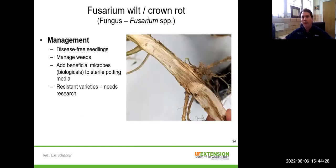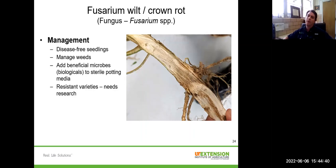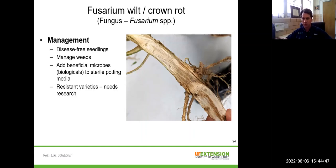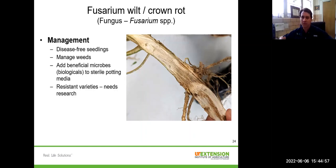Fusarium wilt or Fusarium crown rot is also a difficult disease to manage. There are a number of Fusarium species that can cause this. You'll see wilt similar to southern blight, but unlike southern blight you won't get sclerotia forming at the base of the plant. If you cut the stem lengthwise, you'll see brown discoloration in the stem tissue. We often manage Fusarium with resistant varieties in other cropping systems like vegetables, but more research is needed to determine those in hemp.